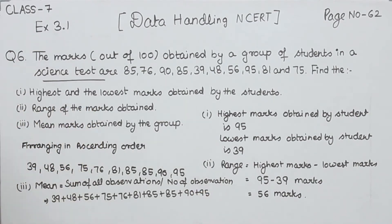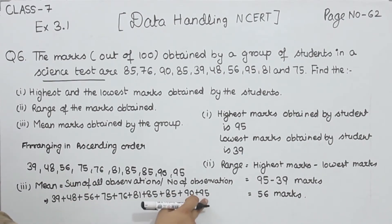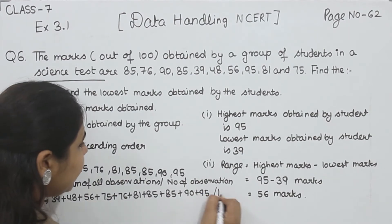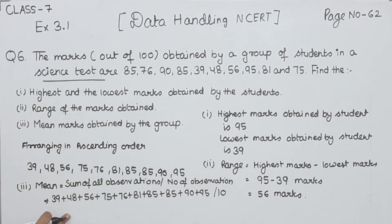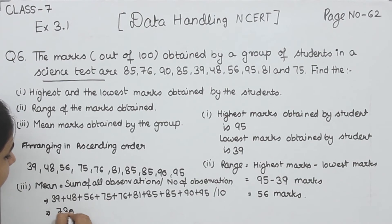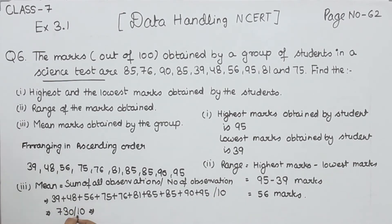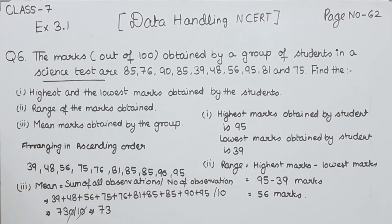Now we have to add these. How many observations are there? 1, 2, 3, 4, 5, 6, 7, 8, 9, 10. So we divide by 10. The sum of all these numbers is 730; we divide it by 10. The 0 cancels from 0, so the answer is 70.